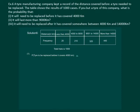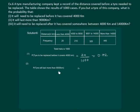The probability of replacement before 4000 km will be equal to the frequency corresponding to less than 4000 km, that is 20, by total number of trials 1000, so it comes out to be 0.02. The second part of the question is to find the probability that the tyre will last more than 9000 km. The frequency will be 325 plus 445, that is 770 by 1000, so the probability is 0.77.